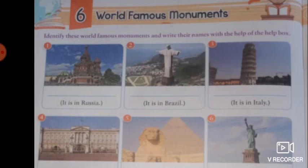Now the third one — this statue is in Italy, and you can see it is slightly tilted. Can you guess the name of this famous monument? You will attempt it yourself.